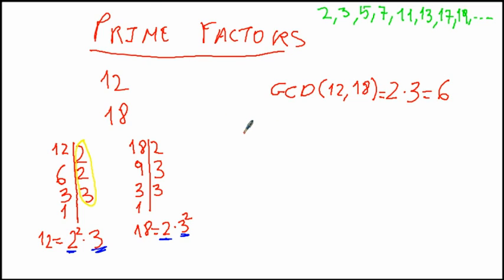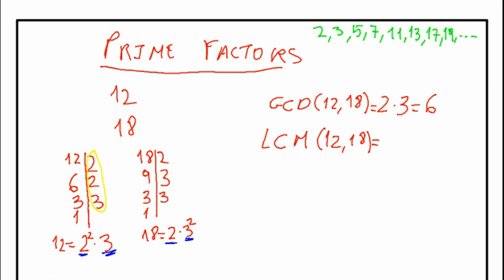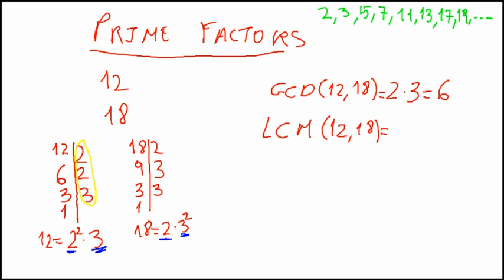Another problem is to find the lowest common multiple, which is the minimum of the multiples that 12 and 18 have in common. To find that, we go back to our prime factorizations.